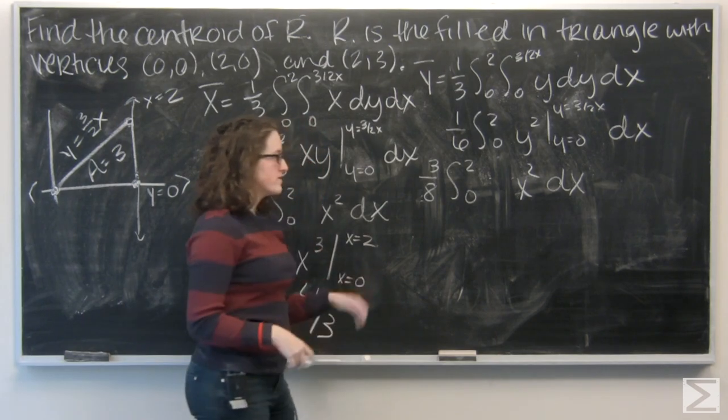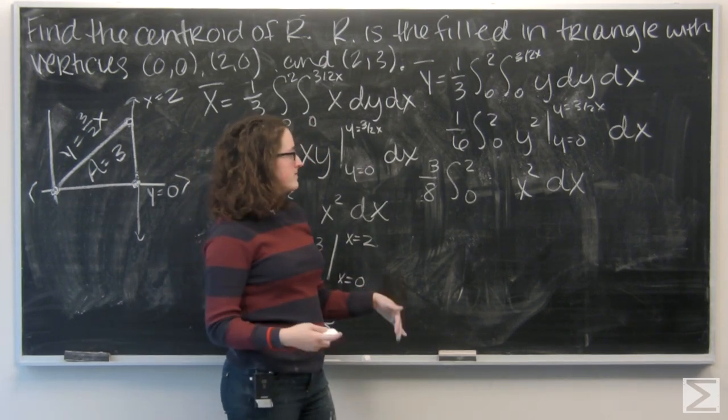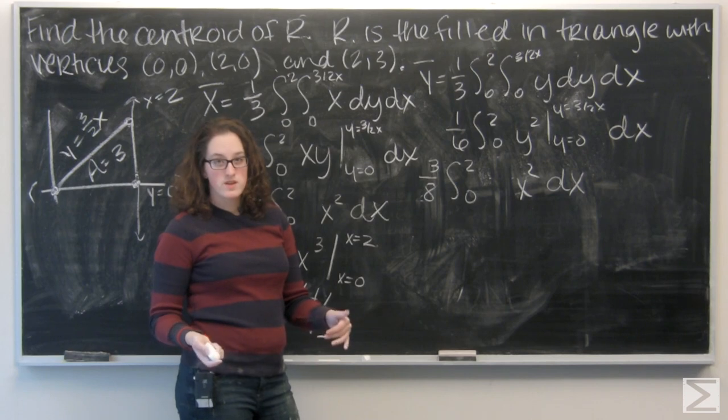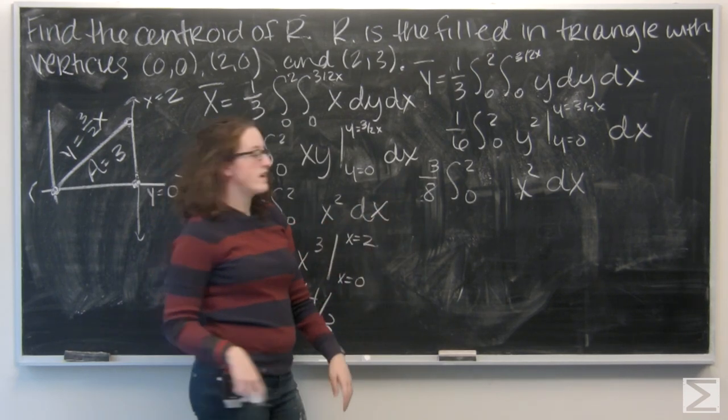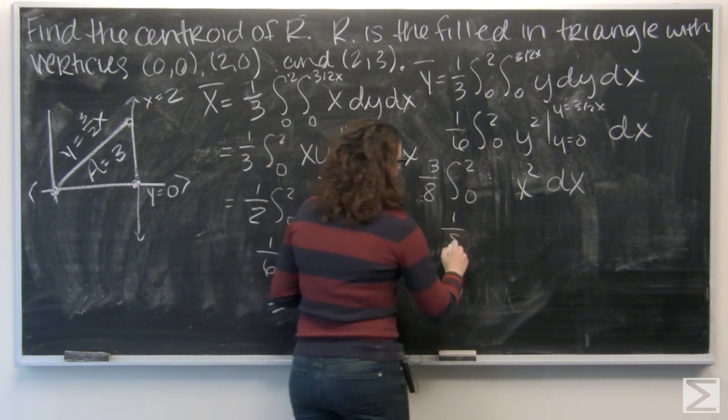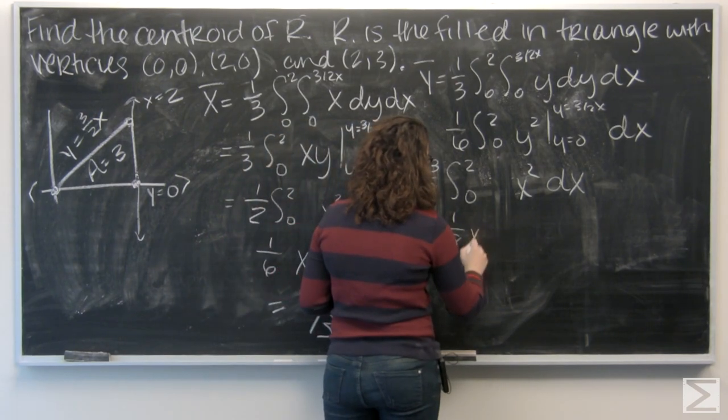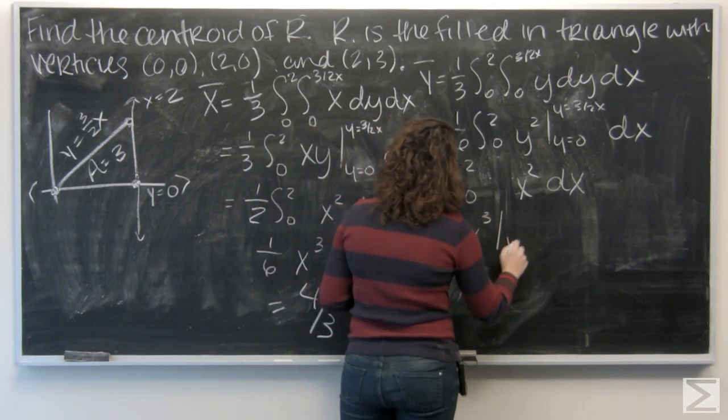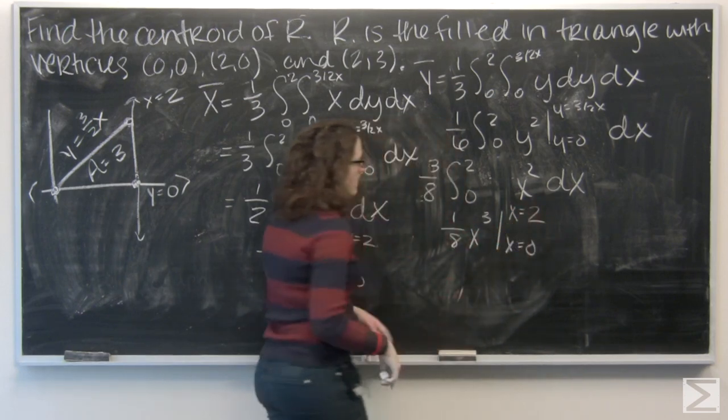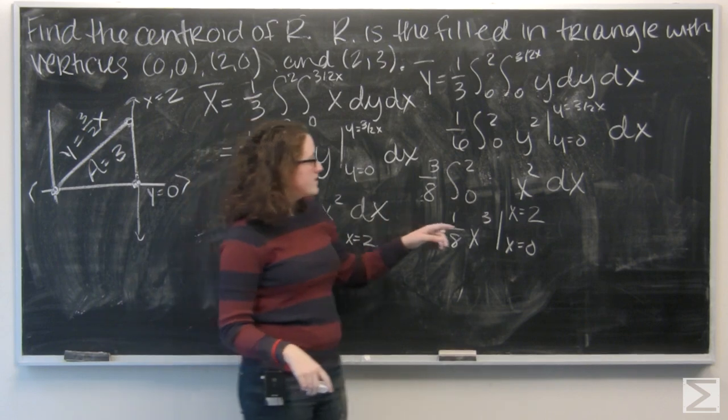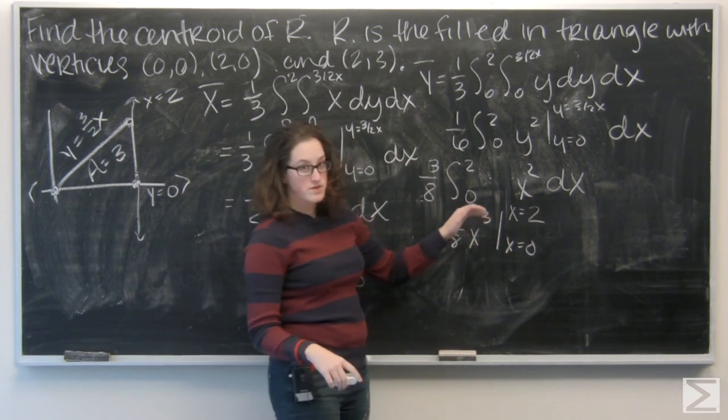Well, this looks pretty good. Now, let's integrate x squared with respect to x. So, that's going to give me 1 third x to the third. I'm going to pull that 1 third out. Give me 1 eighth on the outside. Alright. So, I have x cubed evaluated from x equals 0 to x equals 2.